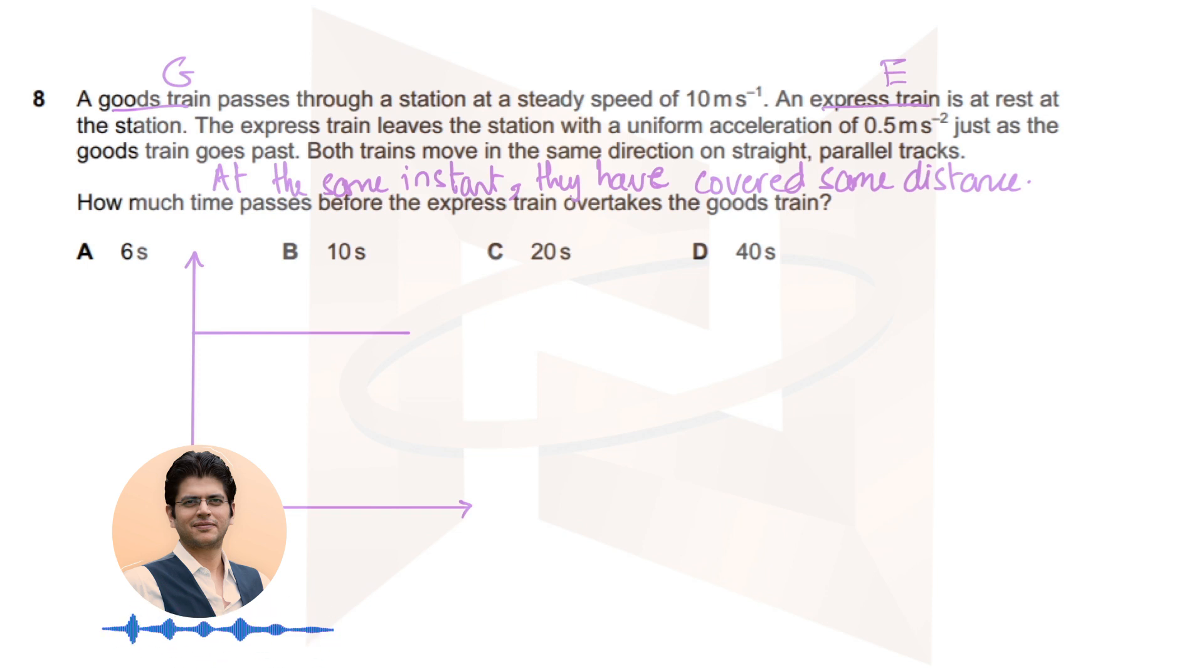So let's say this graph is made for the goods train. Now I'm going to make a graph for the express train as well, so this is my vertical line, and let me just pull up a horizontal line for you very quickly. I was thanking the ruler for helping me create straight lines.